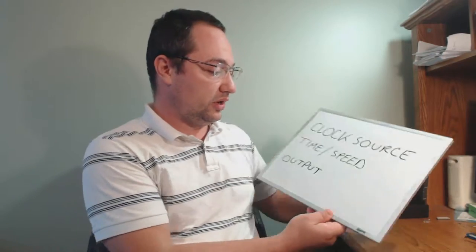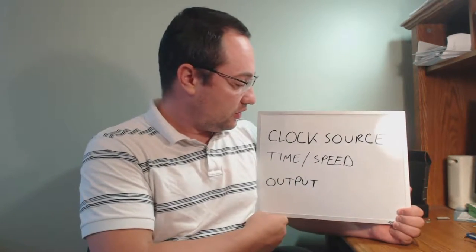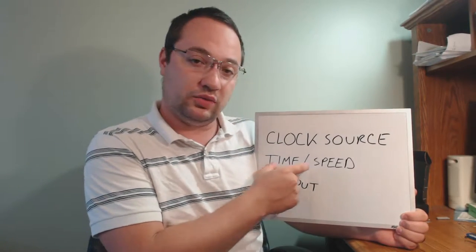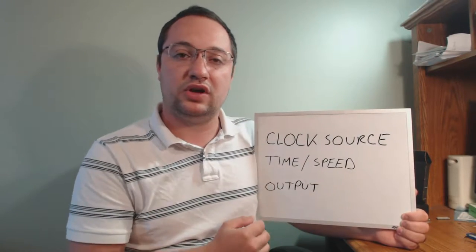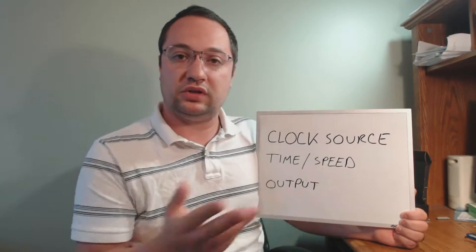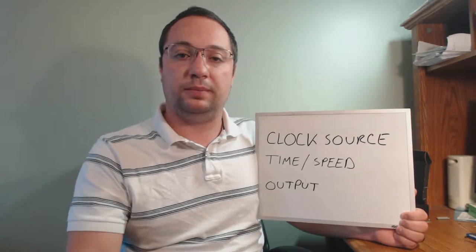So when setting up a timer, you look at three things. You look at your clock source, you look at how much time or how fast the timer is running, and then you look at your output. This is kind of a short setup list. You would figure out this, figure out this, figure out this, and then your timer is set up.